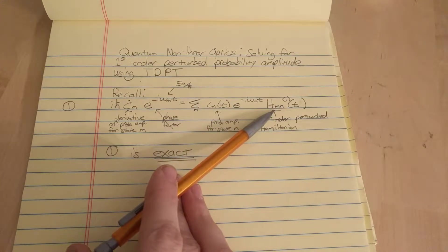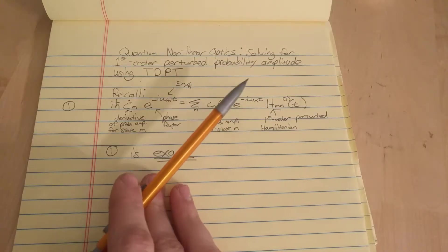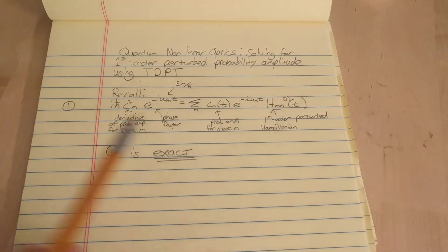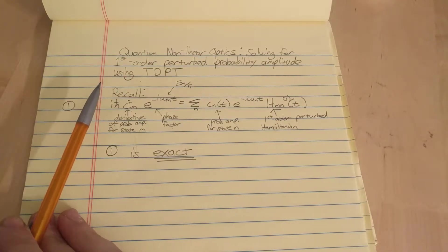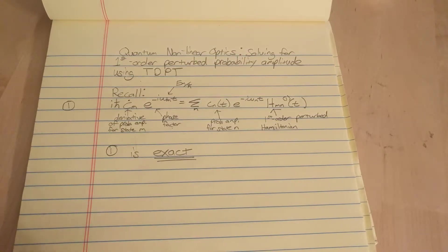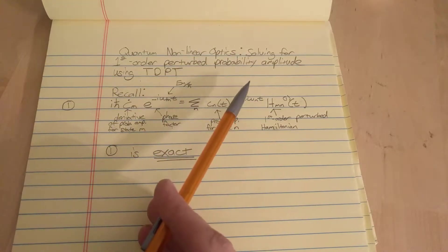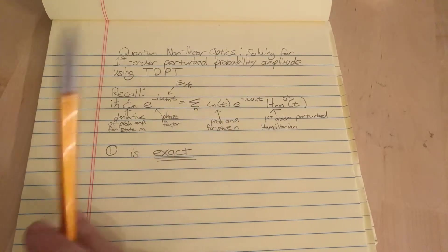And this h over here is the first order perturbed Hamiltonian which is the one that depends on time. Because in that video I wrote the Hamiltonian as a sum of a zeroth order perturbation Hamiltonian which did not depend on time, plus a first order perturbed Hamiltonian which was this one, and it does depend on time.